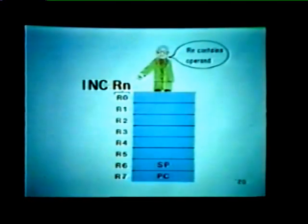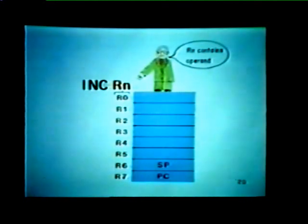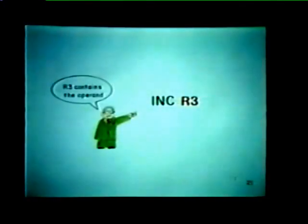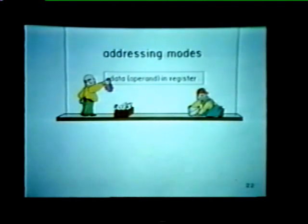Whenever we're writing programs, we use this notation to designate addressing mode zero. The symbol R sub N represents any one of our general purpose registers. These registers are typically referred to by names such as R0, R1, R2, and so on. However, registers R6 and R7 are also referred to as the SP and PC. Remember, the SP is our hardware stack pointer and the PC is our program counter. In this example, we're using an increment instruction in combination with register R3 — register R3 happens to contain the value or operand that we wish to increment. We've now covered one use of the general purpose registers: the necessary data can be located right in the register. This represents the first of our eight addressing modes.